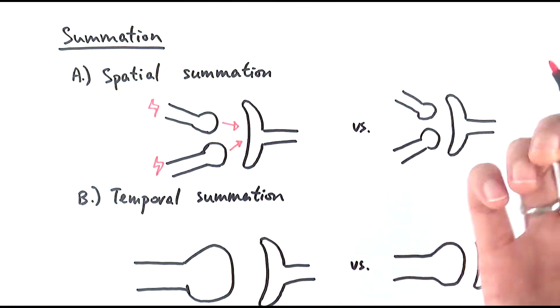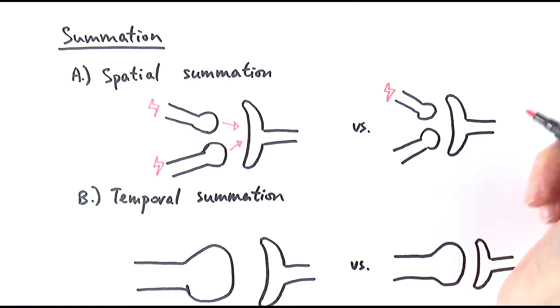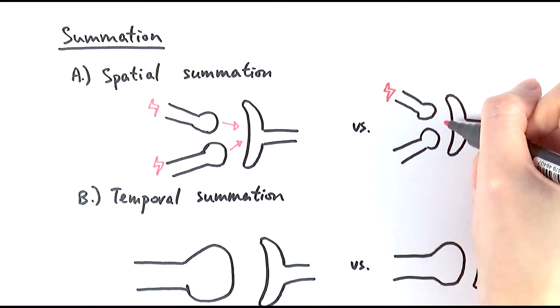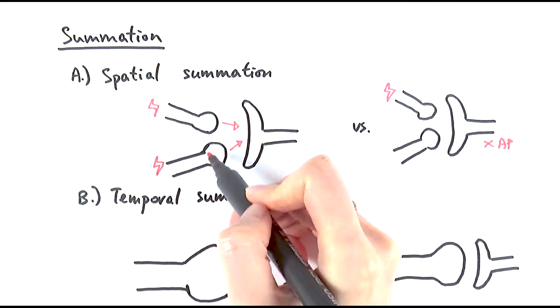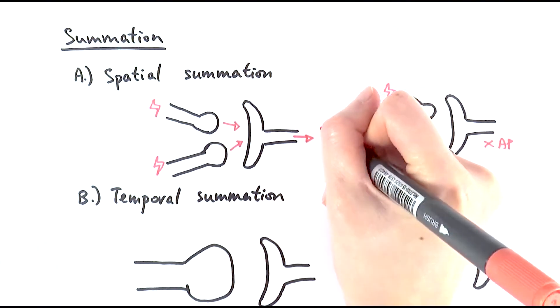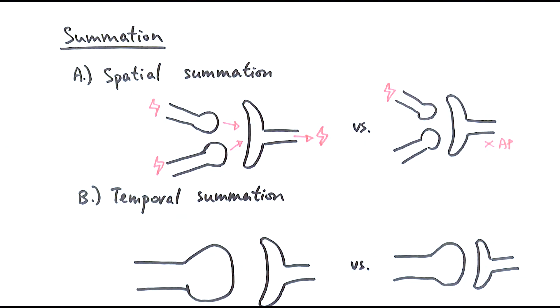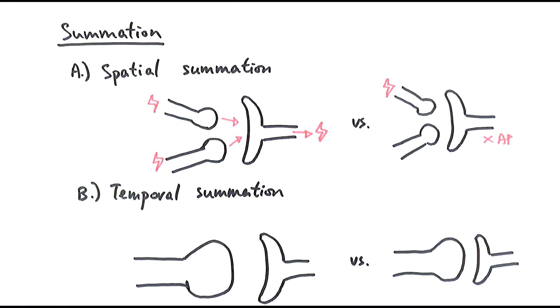Whereas in this particular case, if only one of the presynaptic neurons receives the signal but there is none on the other, then there will be no action potential generated on the next bit. Only when both of these neurons release that neurotransmitter, that's the only situation where the new action potential can be generated. This is what we call spatial summation.